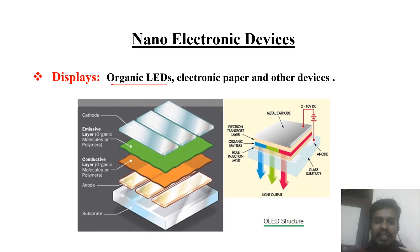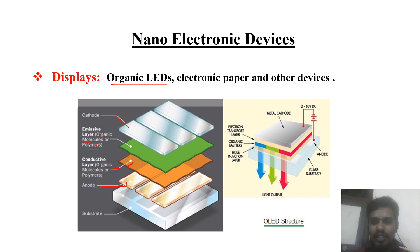Looking at this diagram, the top layer is the cathode layer and the bottom one is the anode layer, with a substrate at the bottom. In between the cathode on top and the anode on the bottom, there are two more layers. These layers are organic molecules or polymers. The top green one is the emissive layer, and the orange one is called the conductive layer — this is also an organic layer.